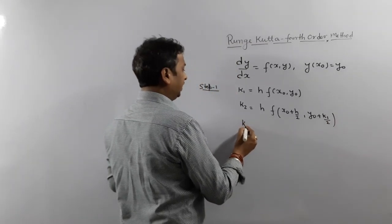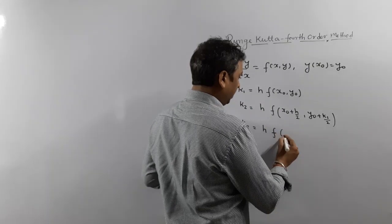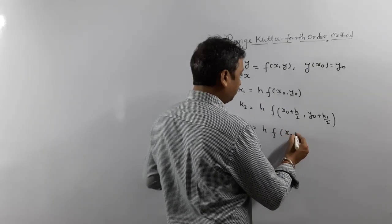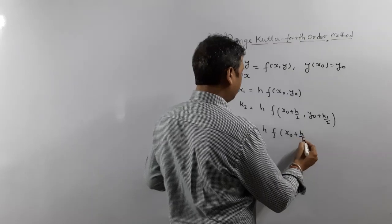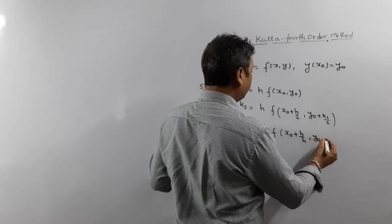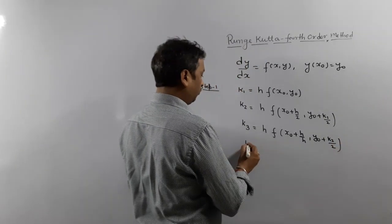Then calculate K3. What is K3? K3 is h times function value at x0 plus h/2 and y0 plus k2/2.